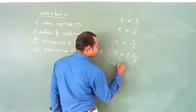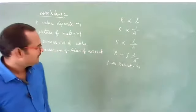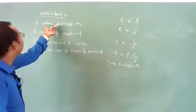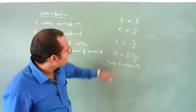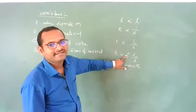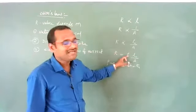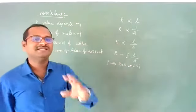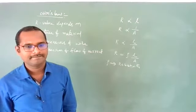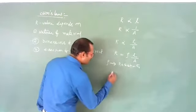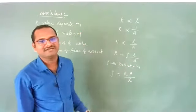Resistivity ρ defines what type of material it is. Different materials have different fixed values of resistivity at a particular temperature. Resistivity depends purely on the nature of the material and does not depend on the dimensions of the wire. From R = ρL/A, we get ρ = RA/L.